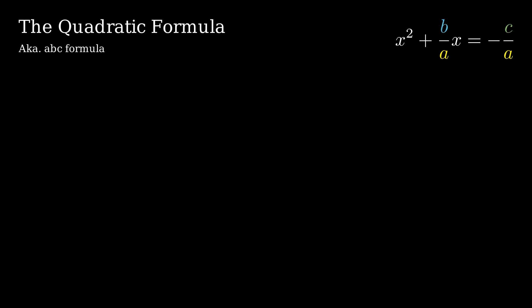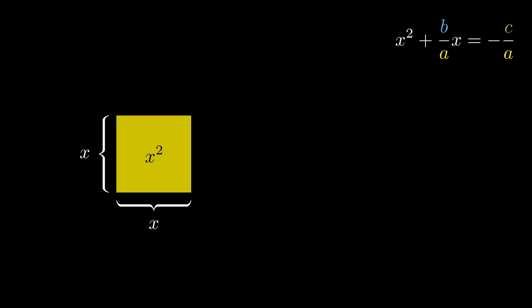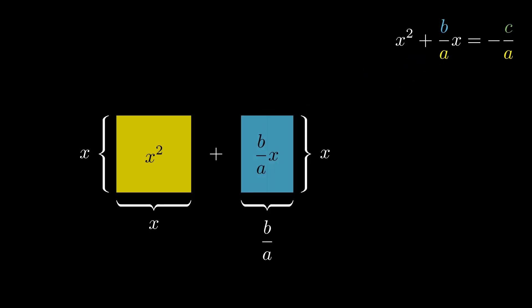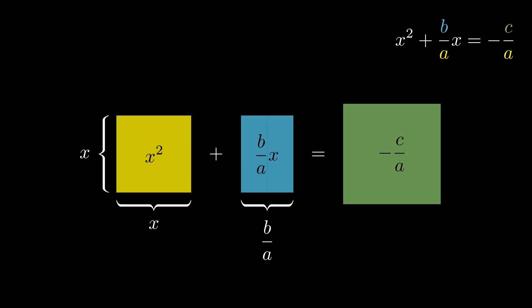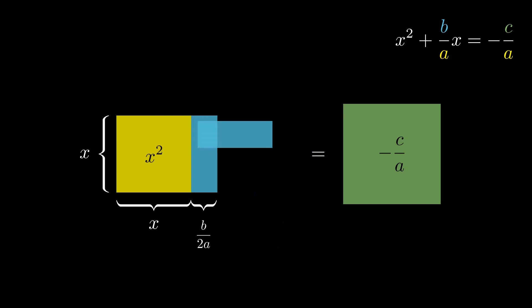We will use the exact same visualizations. x squared as the area of a square with sides equal to x. b over ax as the area of a rectangle with the width of b over a and the height of x. The area of the yellow square plus the area of the blue rectangle should equal to negative c over a. Now, we'll split the rectangle in the middle which will leave us with two equal rectangles with widths of b over 2a and the height of x. These rectangles can now be rearranged on the side and on top of x squared, the yellow square.